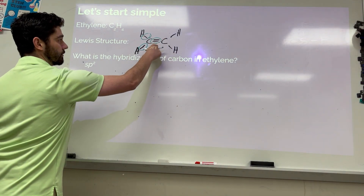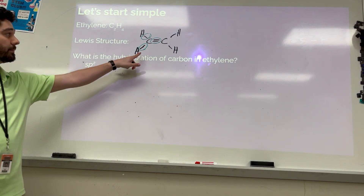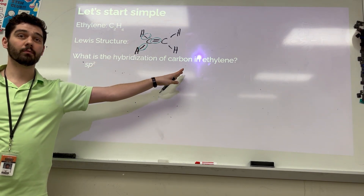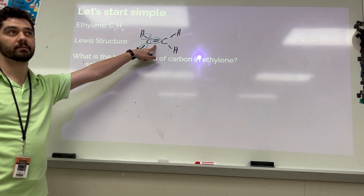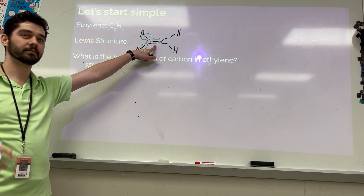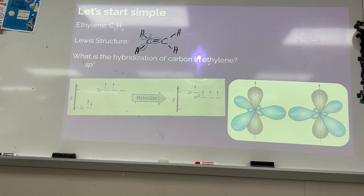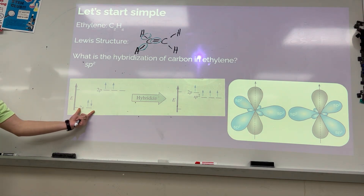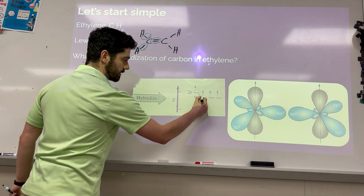Why didn't we use the third p orbital or d orbitals? Because we only need to make three bonds — we use those other orbitals if we need more bonds. A double bond counts as one electron group for determining hybridization. So here's what we're dealing with: this is carbon before bonding. When I hybridize, I take this s orbital and these two p orbitals and make my three sp2 hybrid orbitals.